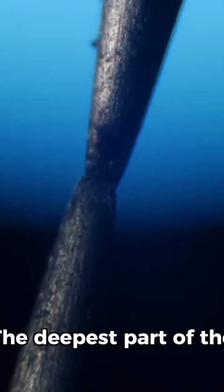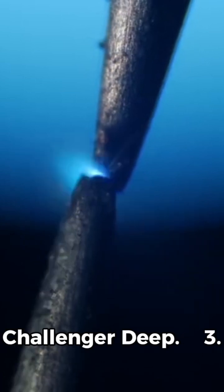2. Deepest point - the Mariana Trench in the Pacific Ocean is the deepest point on Earth, plunging to about 36,000 feet (10,970 meters). The deepest part of the Trench is called Challenger Deep.